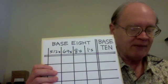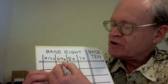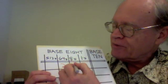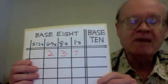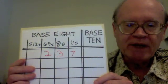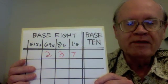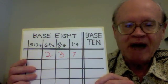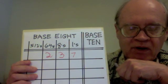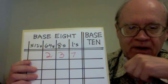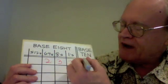So, for example, we might have this base 8 number: 2, 3, 7. What does that mean? The 2 means 2 times 64, which is 128. The 3 means 3 times 8, which is 24. 128 plus 24 is 152. Plus 7 ones makes 159.